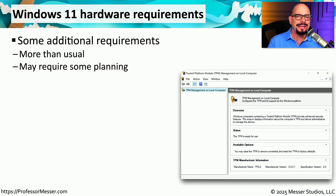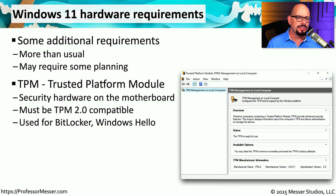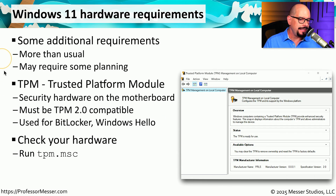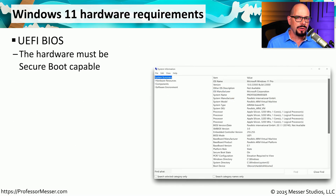There may be cases where you can't simply install Windows 11 on a machine currently running Windows 10. One of the major requirements for Windows 11 is a TPM — Trusted Platform Module — which is hardware on the motherboard that must be compatible with TPM 2.0 or later. This is cryptographic hardware used for BitLocker, Windows Hello, and other Windows features. You can check your TPM details by running tpm.msc, the Microsoft snap-in for the Microsoft Management Console. Windows 11 also requires a UEFI BIOS that supports Secure Boot.